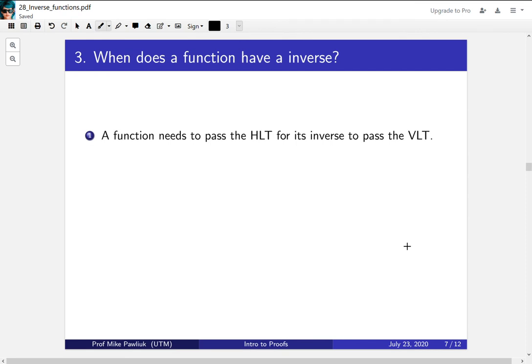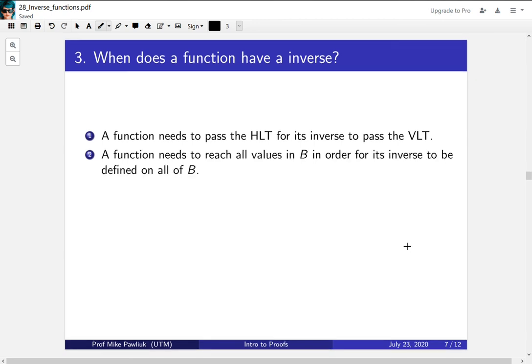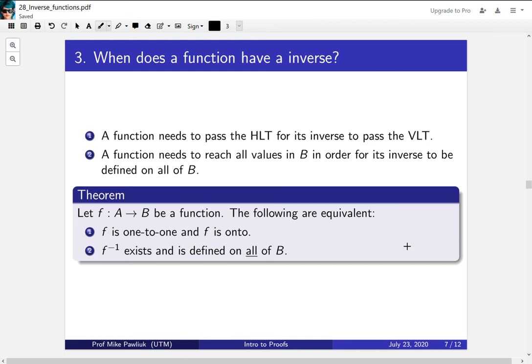Our next question is, when does a function have an inverse? So there are two very important properties. A function itself needs to pass the horizontal line test in order for its inverse to pass the vertical line test. And passing the horizontal line test means it is an injection. The second important thing is that your original function needs to reach all the values in B in order for its inverse to be defined on all of B. So this means it needs to be a surjection.